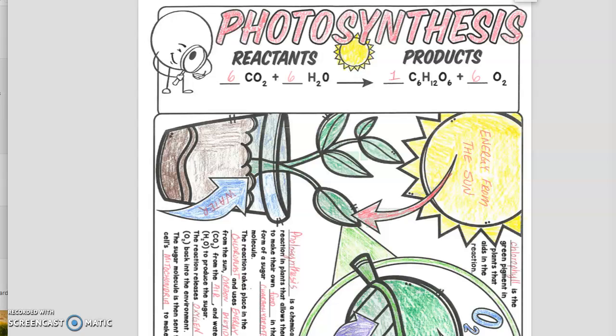It uses the sun's energy to produce 1 glucose or sugar molecule and 6 oxygen molecules. So that's a whole summary of what's happening here. But let's take a closer look at what happens, particularly within the whole process of photosynthesis.